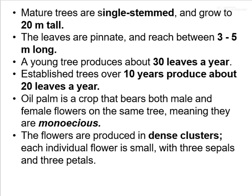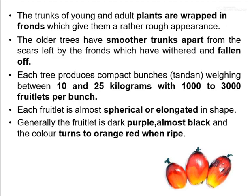The oil palm is a crop that bears both male and female flowers on the same tree, meaning they are monoecious. The flowers are produced in dense clusters. Each individual flower is small with 3 sepals and 3 petals. The trunk of young and adult plants are wrapped in fronds, which gives them a rather rough appearance. Older trees have a smoother trunk, apart from the scars left by fronds that have weathered and fallen off.